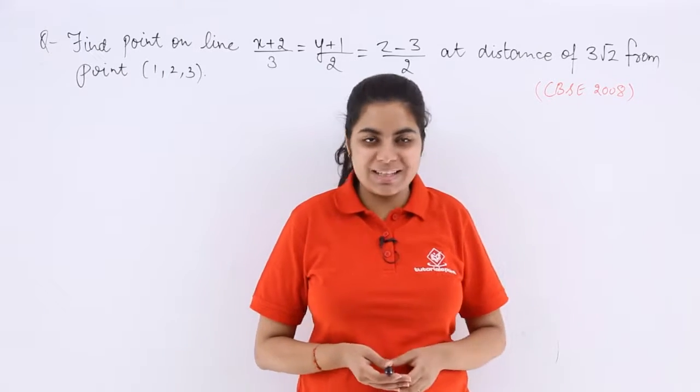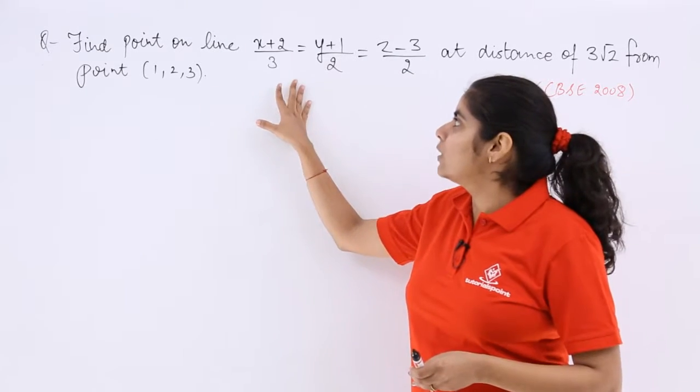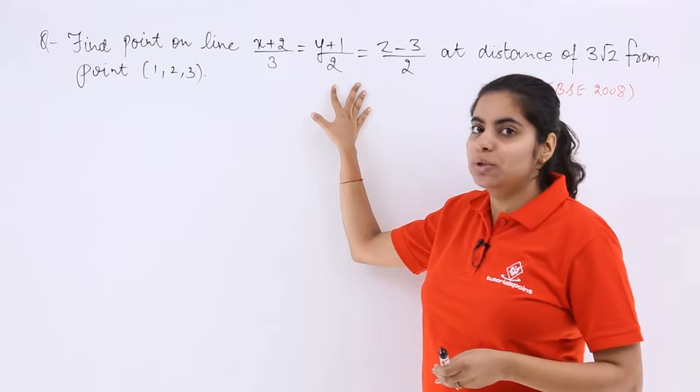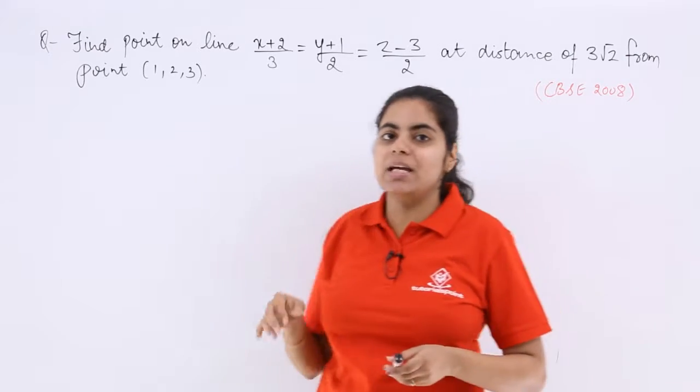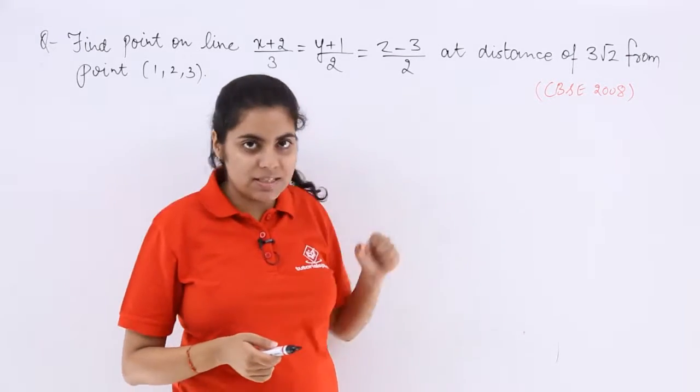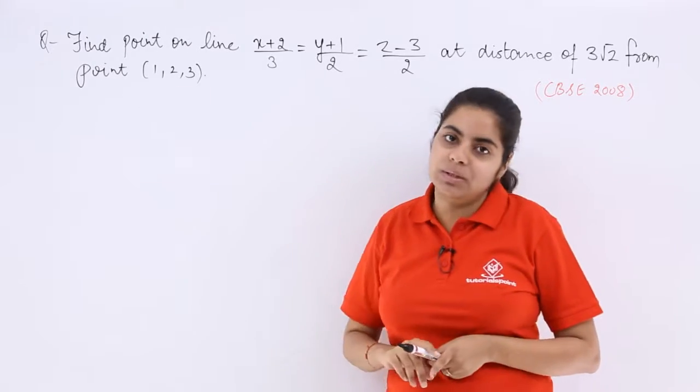A CBSE previous year 2008 question says find the point on the line x plus 2 upon 3 is equal to y plus 1 upon 2 is equal to z minus 3 upon 2 at a distance of 3 root 2 from the point 1, 2, 3.